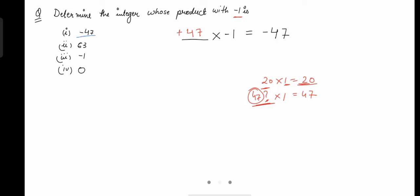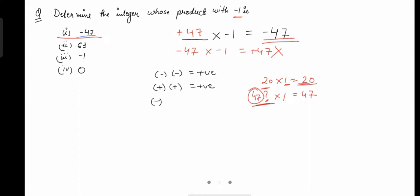Why positive? Because when you multiply positive with negative you get negative 47. If instead you use negative 47 multiplied by negative 1, you get positive 47, which is not required. Now let's state the sign rules: negative times negative gives positive; positive times positive gives positive; negative times positive gives negative; and positive times negative gives negative. So wherever we have the same signs the answer is positive, and wherever we have different signs the answer is negative.